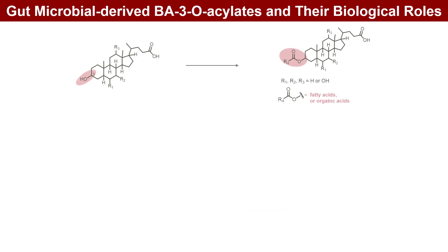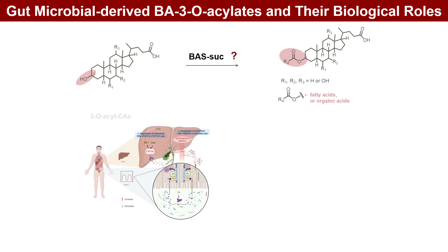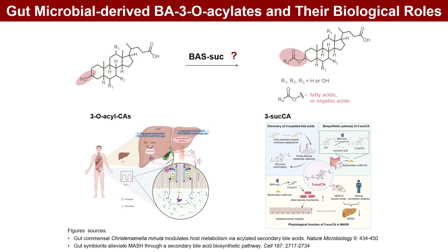Later research revealed that fatty and organic acids can conjugate at the C-3 position of BAs to form 3-O-acylation BAs. BASSUC, a beta-lactamase, was responsible for the esterification of succinic acid with CA in Bacteroides uniformis. It is unclear if other enzymes perform esterification. 3-O-acyl-CA antagonized FXR, and 3-succinyl-CA alleviated MASH symptoms by promoting Akkermansia muciniphila growth in mice.